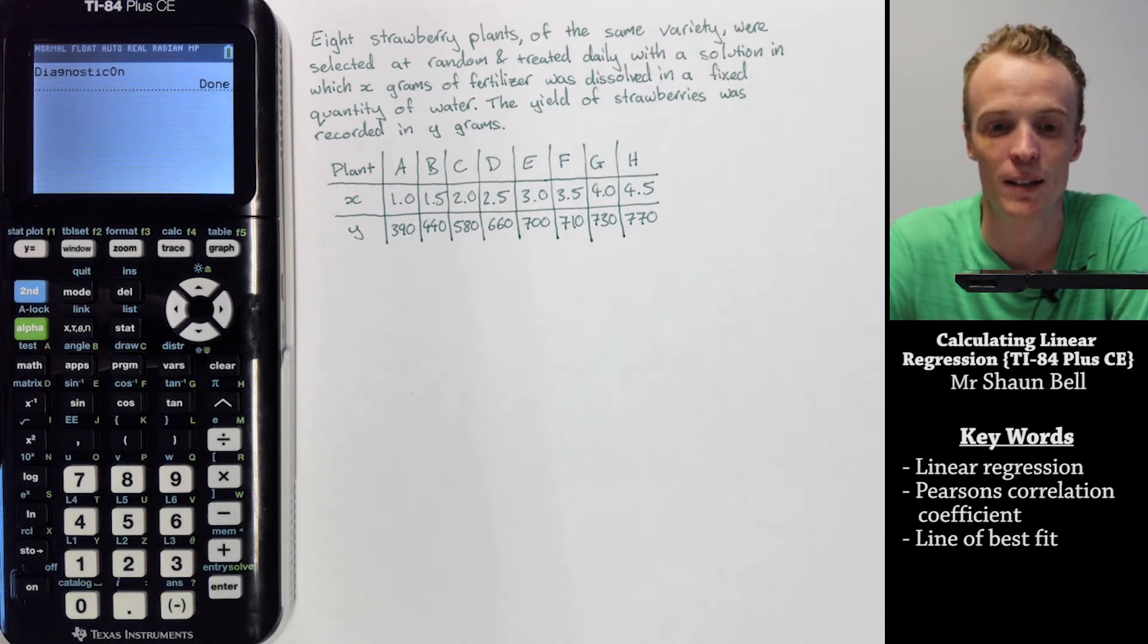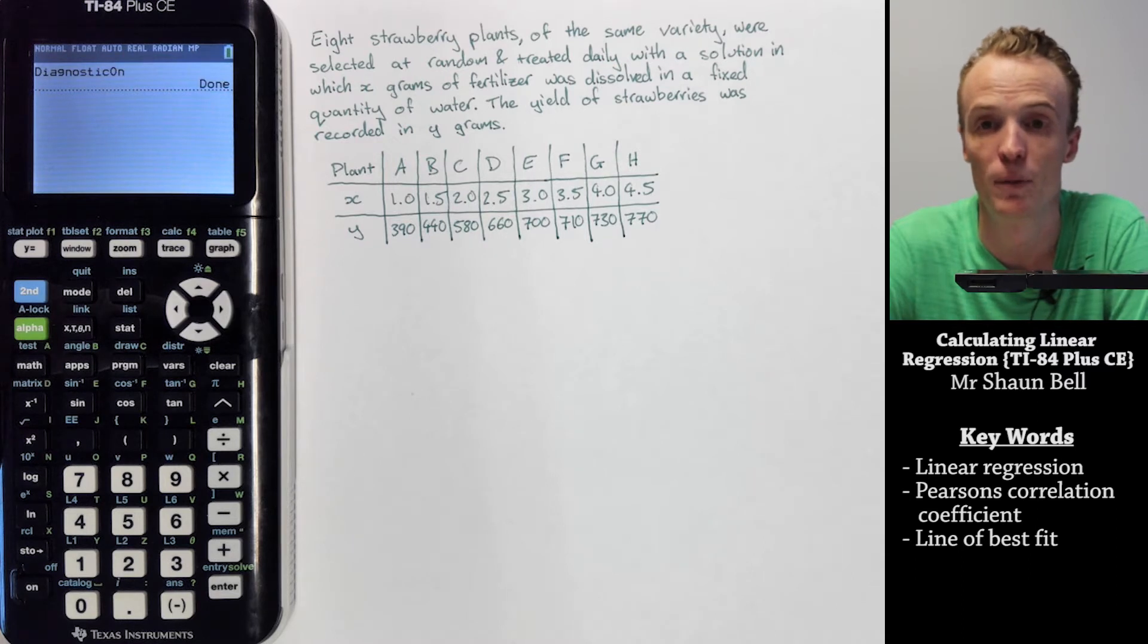Now let's look at our problem. We've got eight strawberry plants of the same variety that were selected at random and treated daily with a solution in which x grams of fertilizer were dissolved in a fixed quantity of water. The yield of strawberries was recorded in y grams.